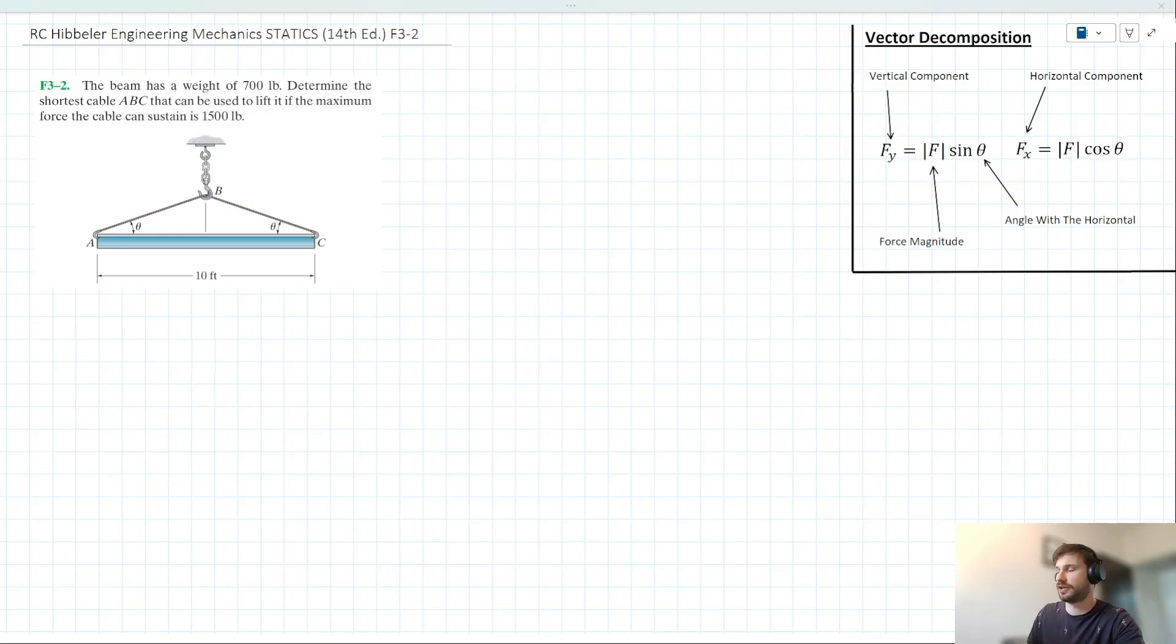The beam has a weight of 700 pounds. Determine the shortest cable ABC that can be used to lift it if the maximum force the cable can sustain is 1,500 pounds.